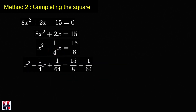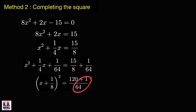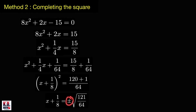We add 1/64 to both sides of the equation. Now the left-hand side is a perfect square trinomial, which we write as (x plus 1/8)². The right-hand side: 15/8 becomes 120/64, plus 1/64. Taking the square root of both sides — don't forget the plus-or-minus sign — gives plus or minus the square root of 121 over 64. The square root of 121 is 11, and the square root of 64 is 8, so this equals plus or minus 11/8.